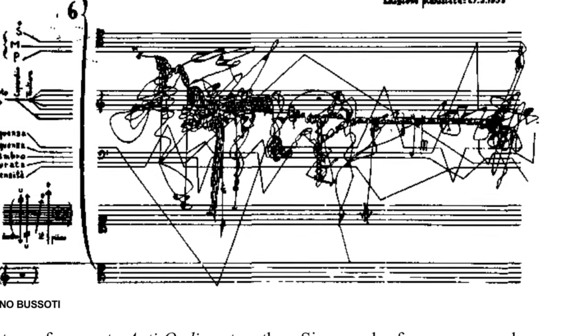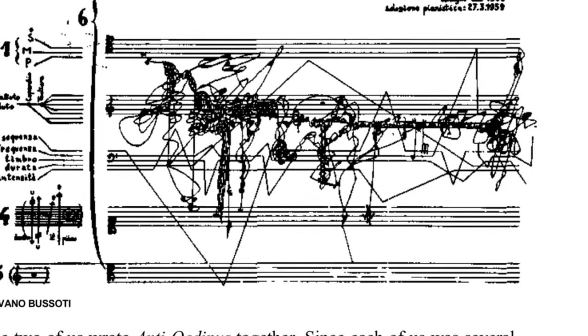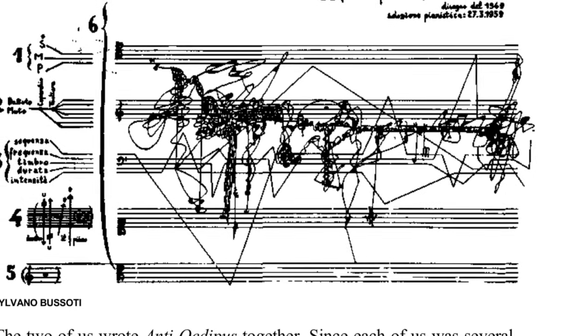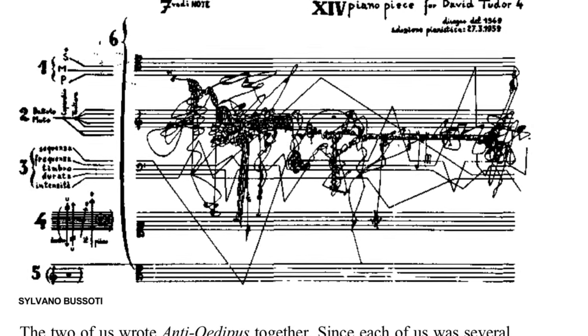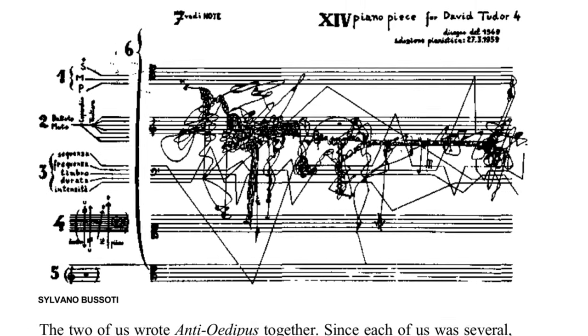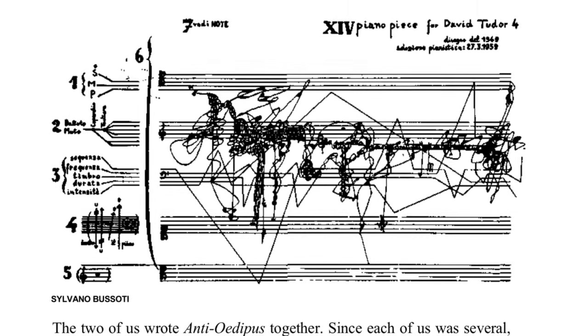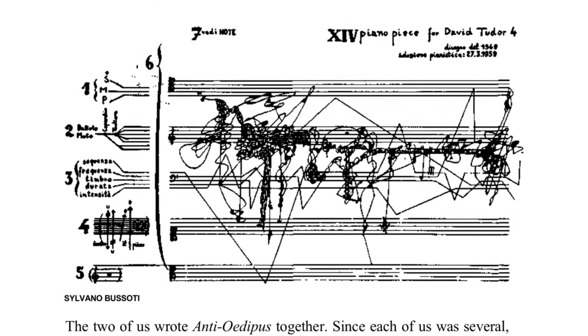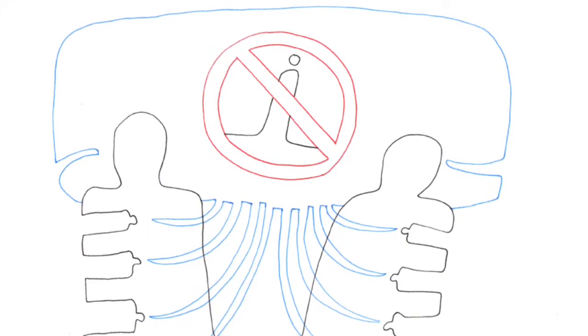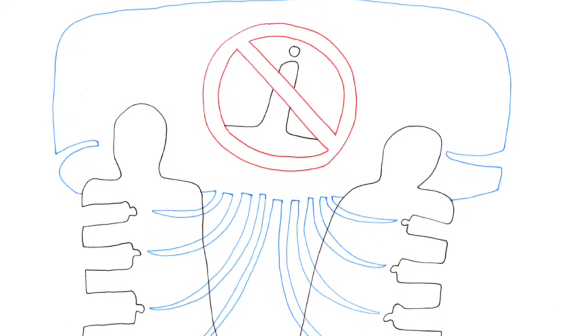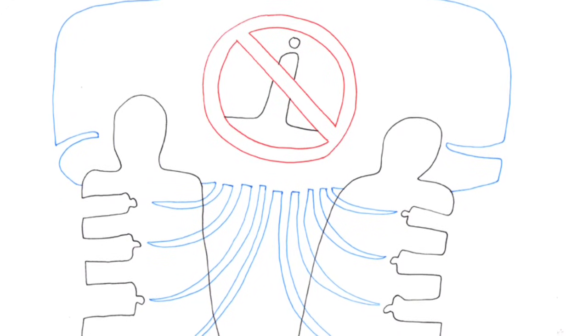The two of us wrote Anti-Oedipus together. Since each of us was several, there was already quite a crowd. Here we have made use of everything that came within range, what was closest as well as farthest away. We have assigned clever pseudonyms to prevent recognition. Why have we kept our own names? Out of habit. Purely out of habit. To make ourselves unrecognizable in turn. To render imperceptible, not ourselves, but what makes us act, feel and think.